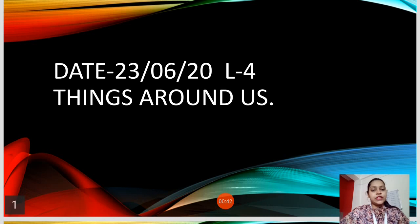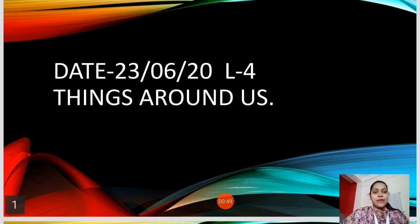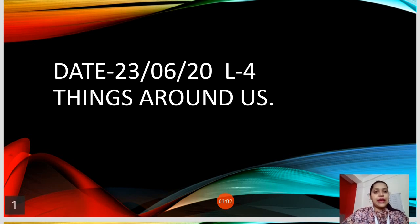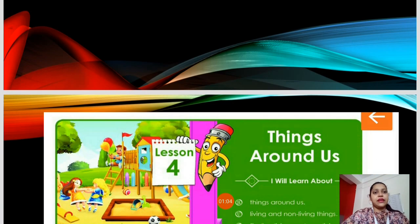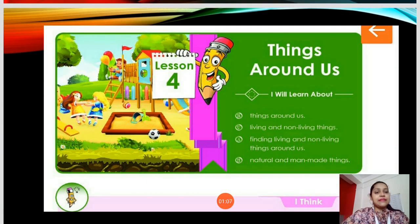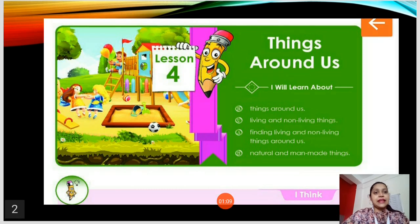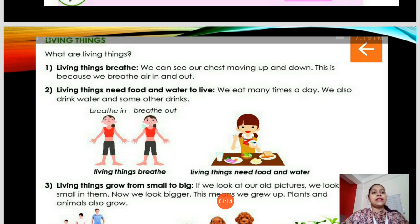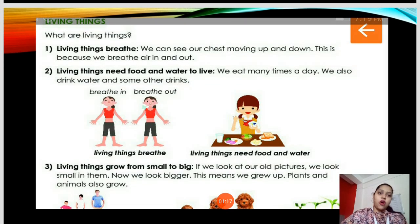All of you take out your textbook and turn to lesson number four, Things Around Us, so that when I explain, you can follow along in the book and it will be easier to understand. In this lesson we mainly studied two very important things: living things and non-living things.